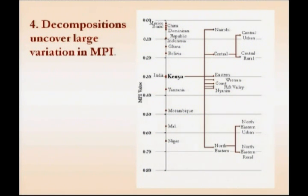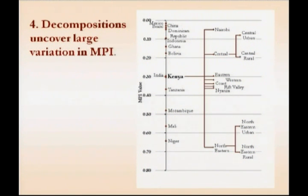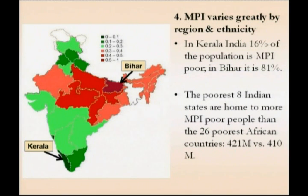Nearing the end, we also decomposed within a few countries, and as James said, that's one of the values of this measure — particularly important at the national level. This is a decomposition for Kenya, decomposed both by region and by ethnic group. The MPI of Nairobi is about like the Dominican Republic, and the MPI in the northeastern rural area is higher than that of Niger, our poorest country. Bolivia had a much less spread. We also decomposed India, similarly finding a spread from 16 to 81% of the MPI poor head count, and did a comparison between the states of India and the poorest African countries.